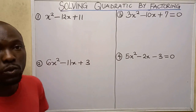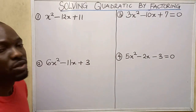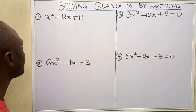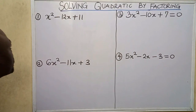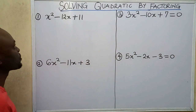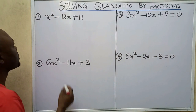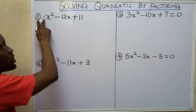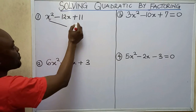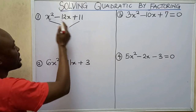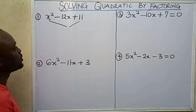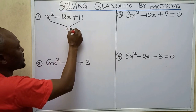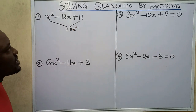We want to factorize all of these quadratic functions — they are trinomials. For the first problem, I'm going to multiply the first term by the last term. Since the leading coefficient is 1, if I do that I'm going to get plus 11x squared.